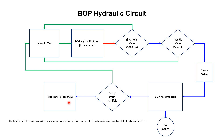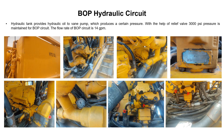Now we will see the components with the help of pictures. The flow for the BOP circuit is provided by a vane pump driven by the diesel engine. As already discussed, the BOP hydraulic circuit gets pressure from the double vane pump which is driven by the diesel engine. This is a dedicated circuit used solely for functioning the BOP. Hydraulic oil is stored in the hydraulic tank.